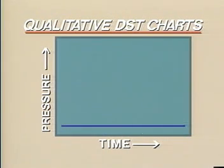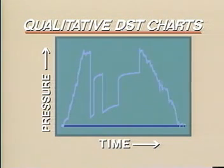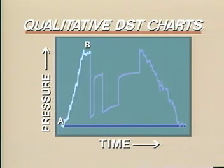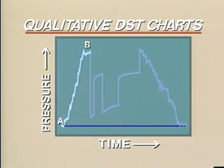We recognize this to be a typical DST chart. A to B on the chart represents the buildup in hydrostatic pressure as the test tools are run into the hole. The line is not smooth because of pressure surges which occur as each connection is made, because of tight spots encountered in the open hole, or because of delays required to add cushion or repair surface equipment.